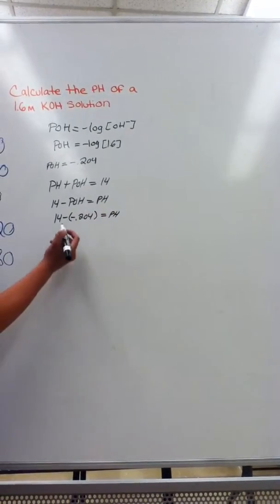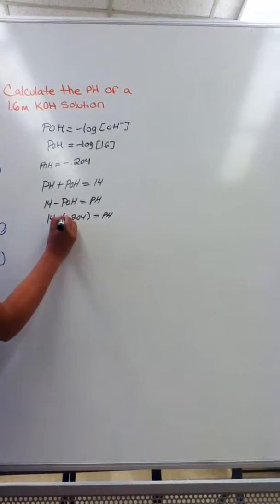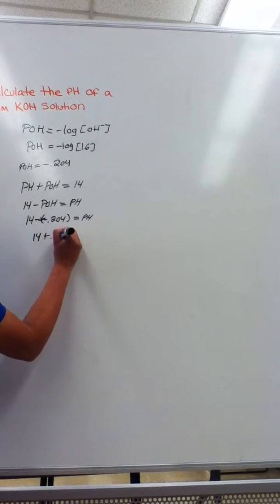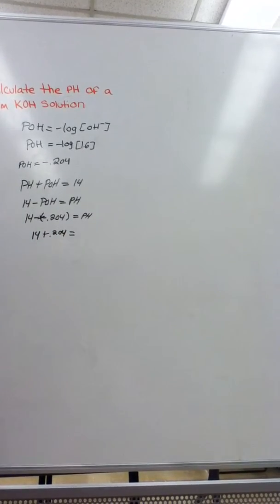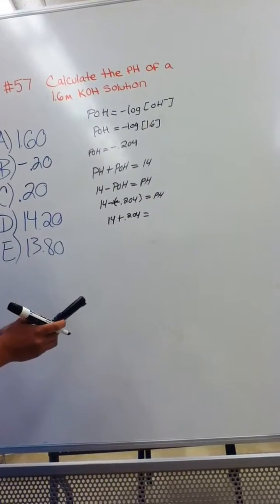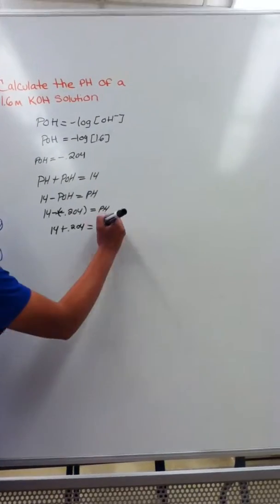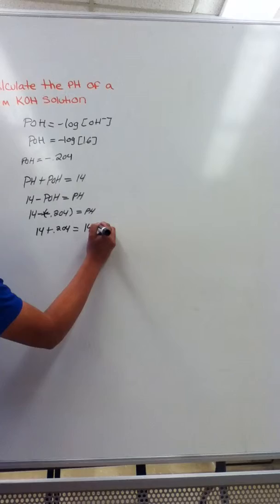Because it's a minus and a negative, it turns into a positive. So it's going to be 14 plus 0.204, and plug that into your calculator and it'll give you 14.20.